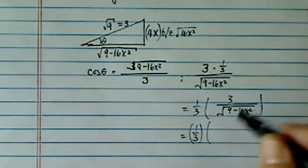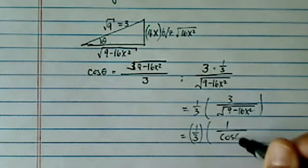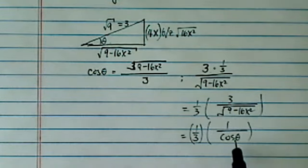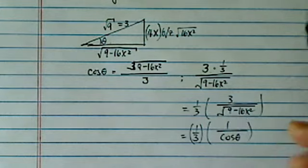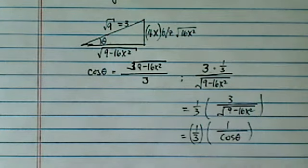This one becomes, of course, 1 over cosine theta. Okay, so I'm done with one term. I have this chunk that I figured out. So, 1 over cosine theta.